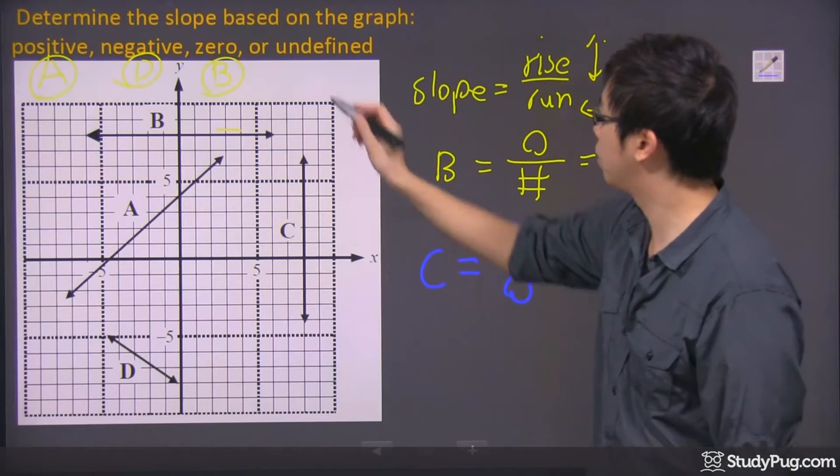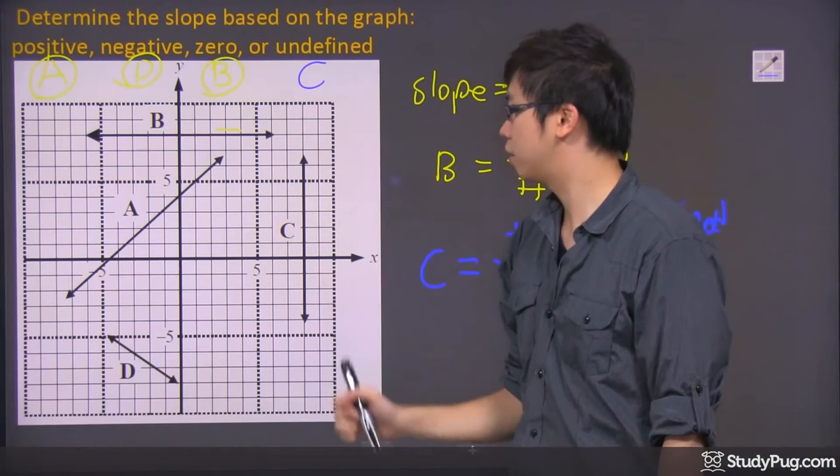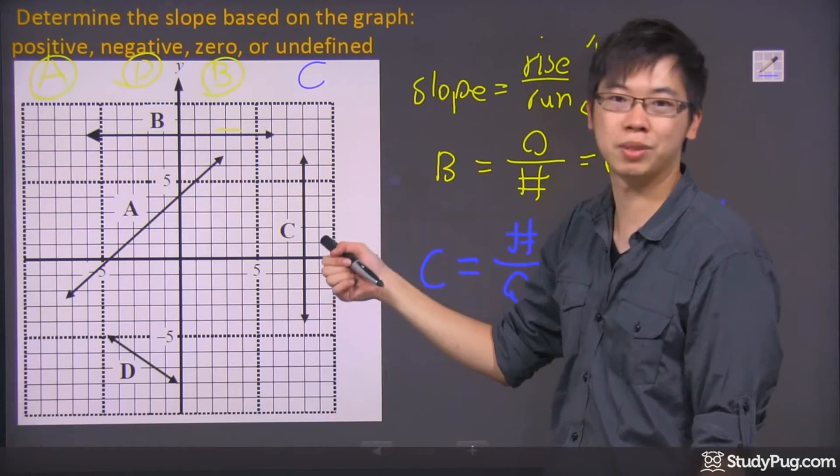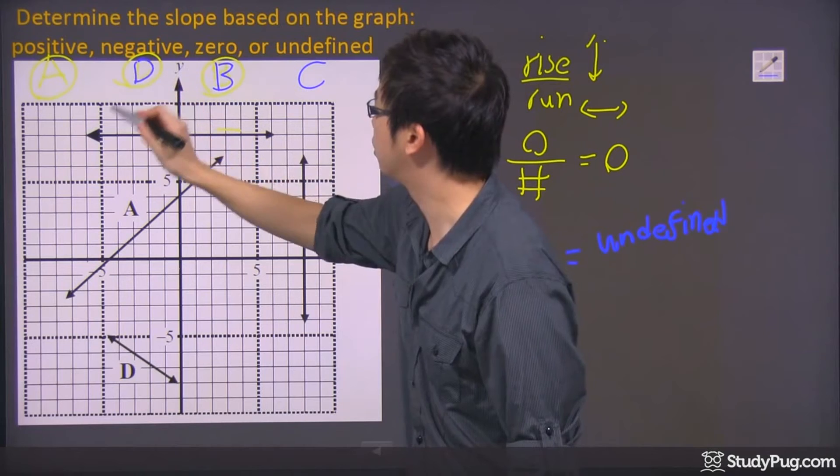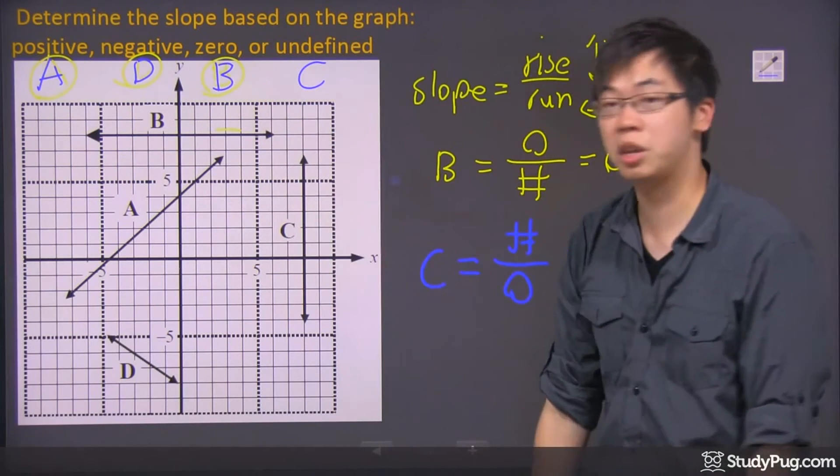And therefore, for slope number C, it's my undefined for the slope number C right here. I'm just going to fill in an answer over here so we can see it better. This one's A, and this one is D, and this one's B, and that one's a C.